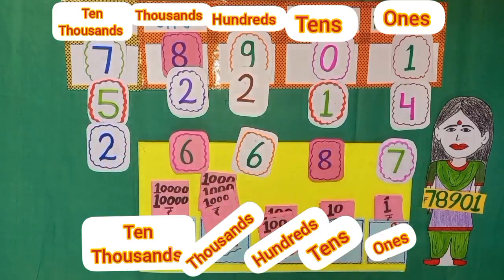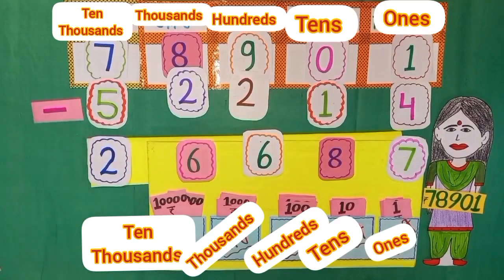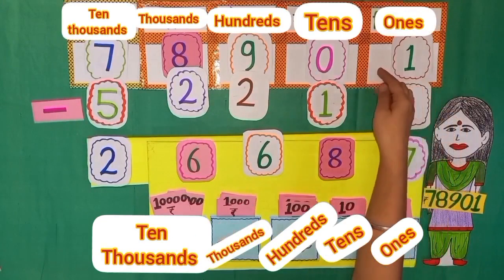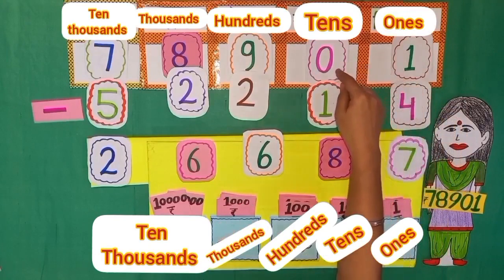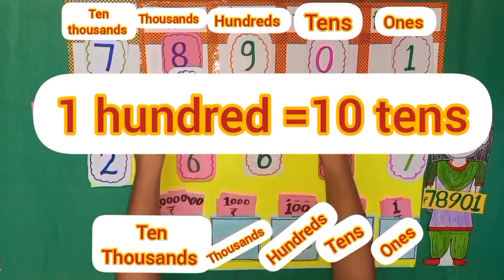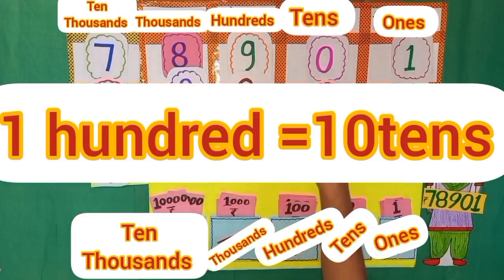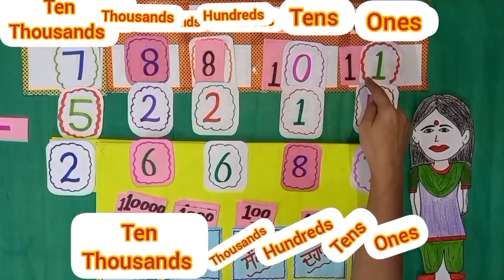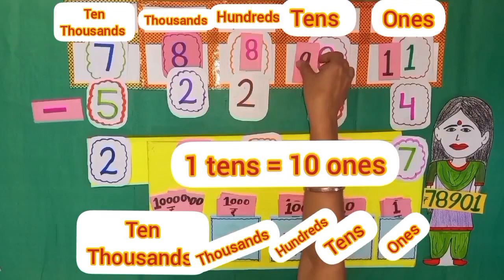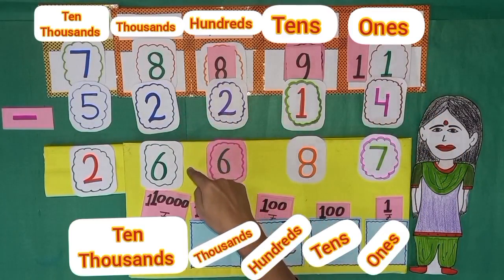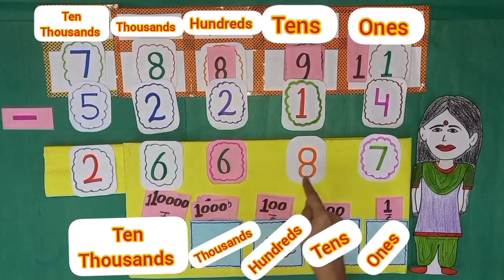Now let's revise this subtraction. 4 is greater than 1 so we can't subtract it from 1. So 1 one will take 10 ones means 1 ten from tens, but here we have 0 tens, and tens will receive 100 means 10 tens from hundreds, because 100 is equal to 10 tens. When 9 hundreds gives 10 tens means 100 to tens, 900 will become 800. Now 10 tens will give 10 ones means 1 ten to ones and they will become 9 tens. 11 minus 4 is 7, 9 minus 1 is 8, 8 minus 2 is 6, 8 minus 2 is 6, 7 minus 5 is 2. The answer is 26,687.